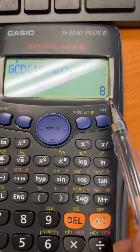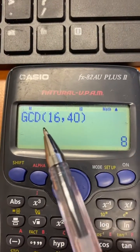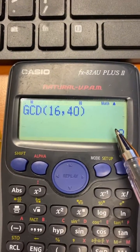The answer is 8. So that is the highest number or the greatest number rather that divides 16 and 40 evenly. 16 divided by 8 is 2 and 40 divided by 8 is 5.